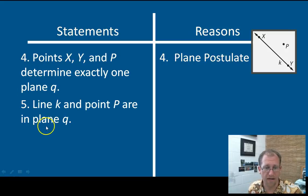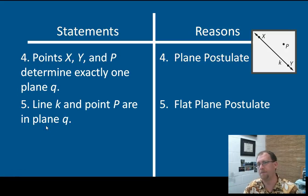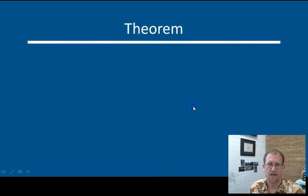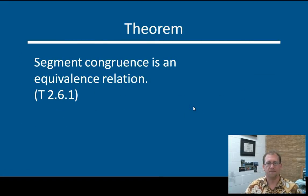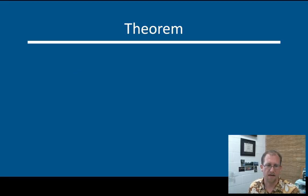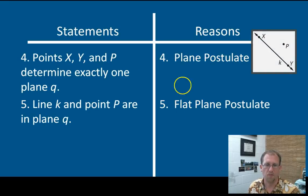Line K and point P are in plane Q. That's the flat plane postulate. That a line and a point not in that line lie in one and only one plane. So, they are in plane Q. That's the flat plane postulate. This defines what I'm getting to. What I was trying to prove. That line K and point P are in plane Q. That's the goal. I got there.